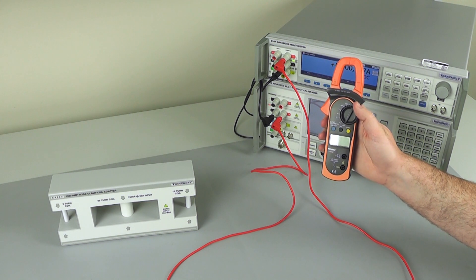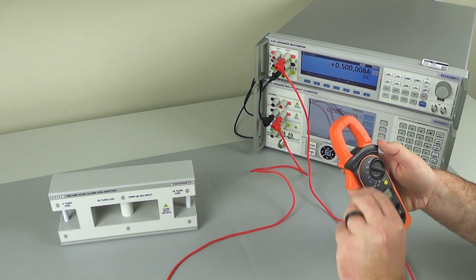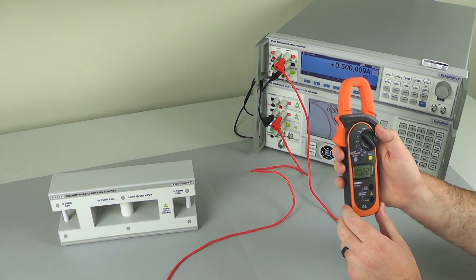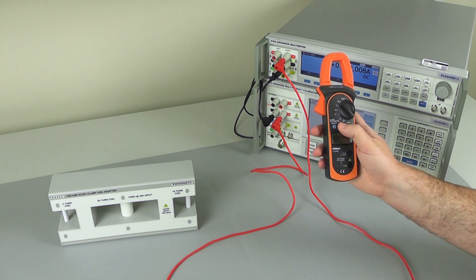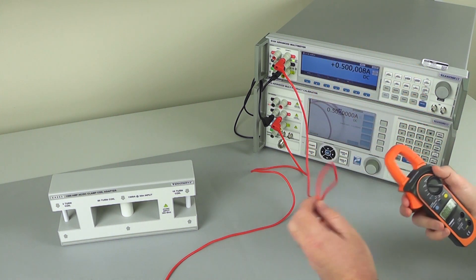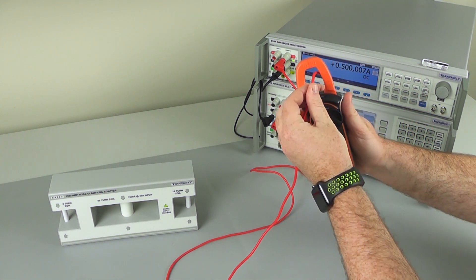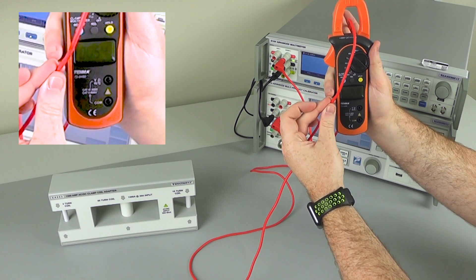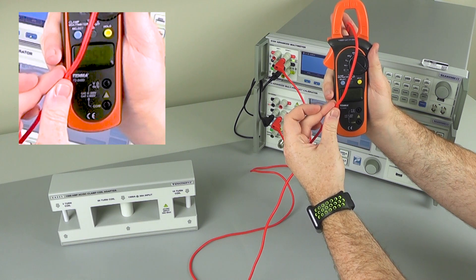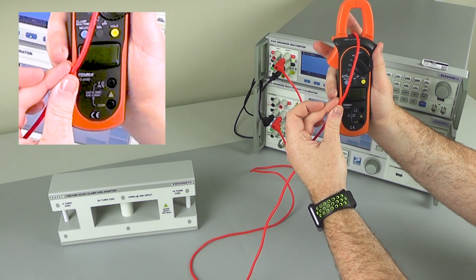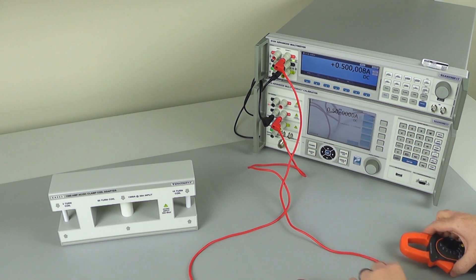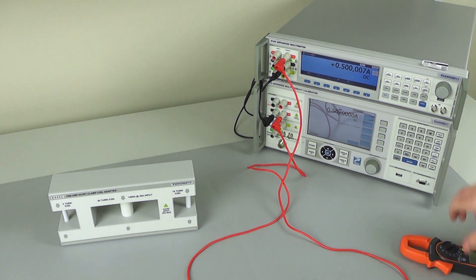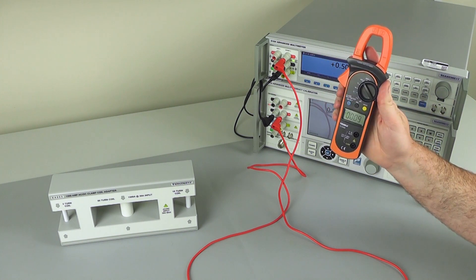So I'm going to grab our handheld clamp meter. Set DC current, the most sensitive range I have, which is a 40 amp range. Perform zero. And now in this wire, we can see we have 0.56, 0.55 amps flowing. We are using the multimeter as the reference for measuring the current. So we now know the error in this clamp meter with our alignment.